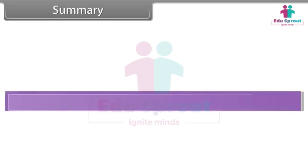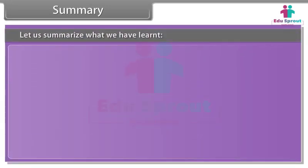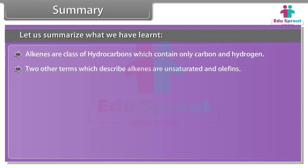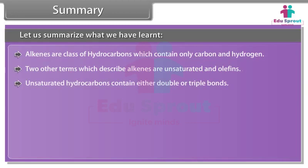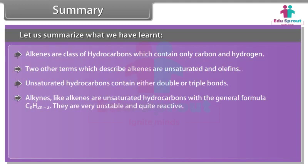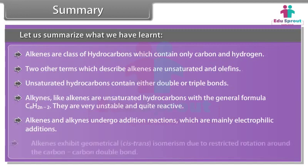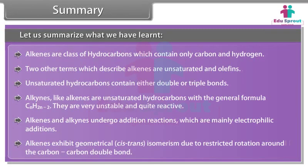Summary: Alkenes are a class of hydrocarbons which contain only carbon and hydrogen. Two other terms which describe alkenes are unsaturated and olefins. Unsaturated hydrocarbons contain either double or triple bonds. Alkynes, like alkenes, are unsaturated hydrocarbons with the general formula CnH2n-2; they are very unstable and quite reactive. Alkenes and alkynes undergo addition reactions, which are mainly electrophilic additions. Alkenes exhibit geometrical cis-trans isomerism due to restricted rotation around the carbon-carbon double bond.